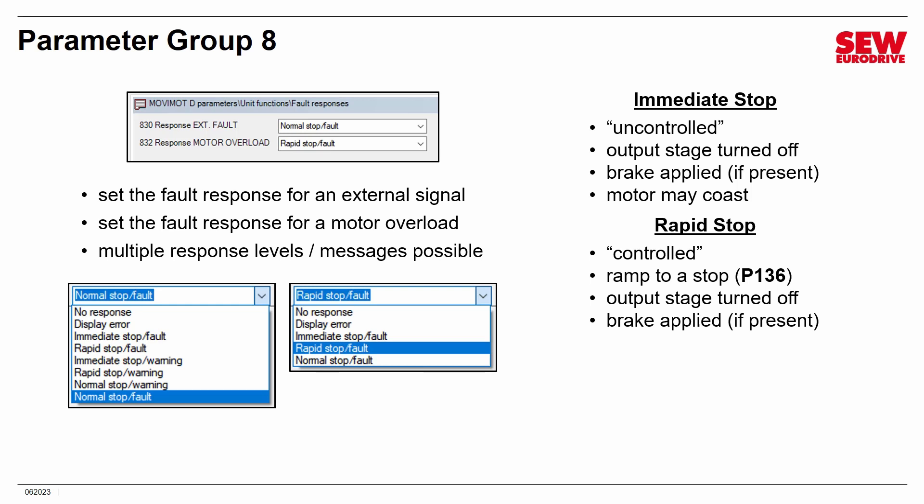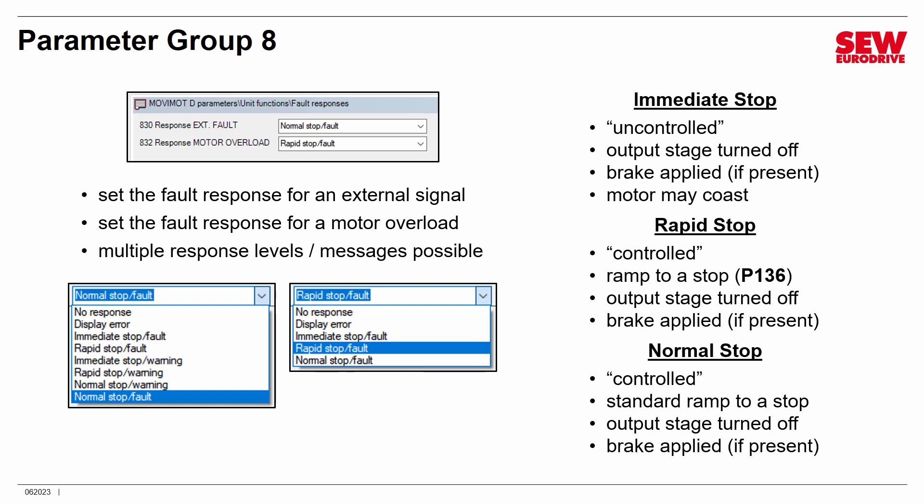Finally, a normal stop is what happens every time you simply disable the motor. In binary mode, if you remove all control signals, you get a normal stop. It uses the standard ramp — either programmed by parameters or the T1 ramp dial — to slow down the motor, then cuts the transistors and applies the brake. You can use any of these three as fault responses. Now it's time for a demonstration — let me show you a few things on the Movimot and demonstrate how some of these parameters work.